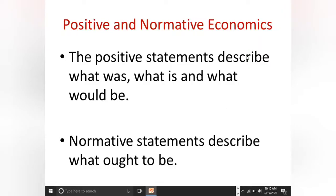अब positive and normative economics। Positive economics के अंदर हम what was, what is, and what would be — क्या था, क्या है, और क्या होगा — इन statements को study करते हैं। इसमें कोई suggestion नहीं होता, simply जो चीज़ें हैं उन्हें बताते हैं। Normative economics में 'what ought to be' — यानि क्या होना चाहिए — इस तरह के statements होते हैं जो suggestion देते हैं।